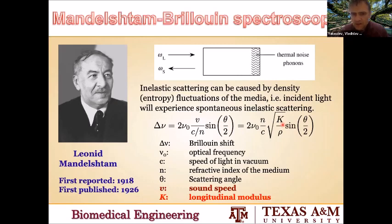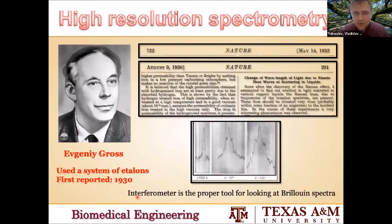This is very important: by doing this measurement, you can essentially measure the longitudinal modulus of your medium. Mandelstam first reported this in 1918 and published it in 1926. This was a clear step forward with respect to Brillouin's work because it allowed you to apply this technique to any kind of medium — it doesn't require an acoustic wave present. Both of those works were theoretical in nature. Someone we should truly appreciate for the advancement of this field is Eugene Gross, who first demonstrated in 1930, using a set of etalons, the very first Brillouin spectra — the beginning of Brillouin spectroscopy.